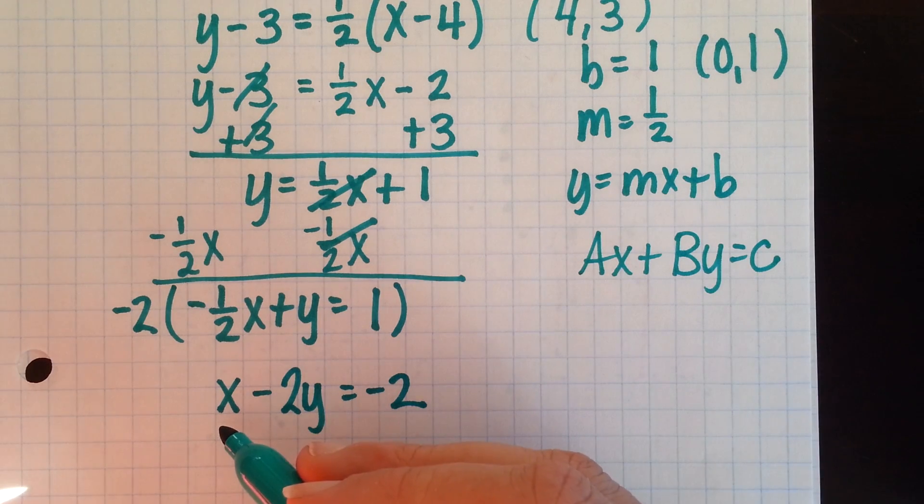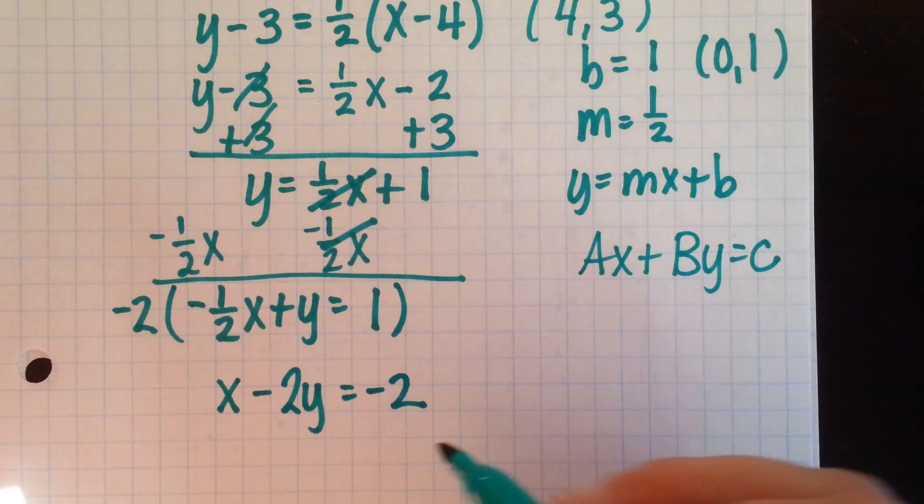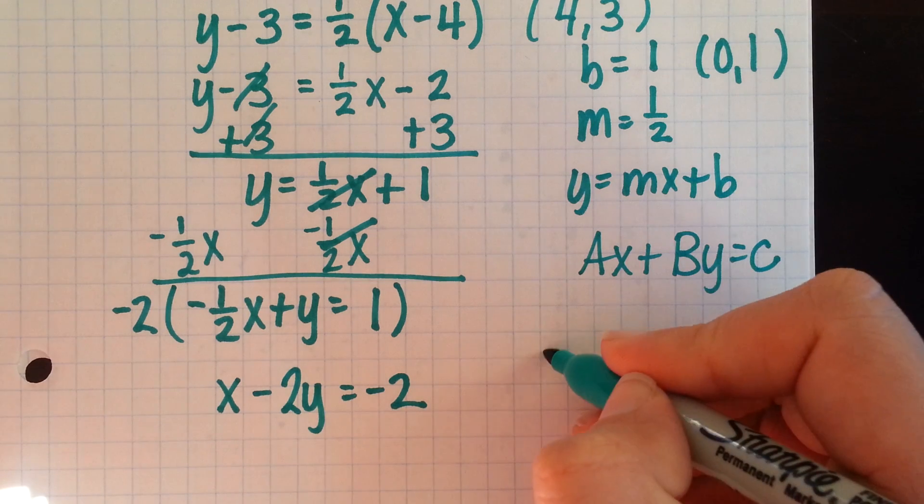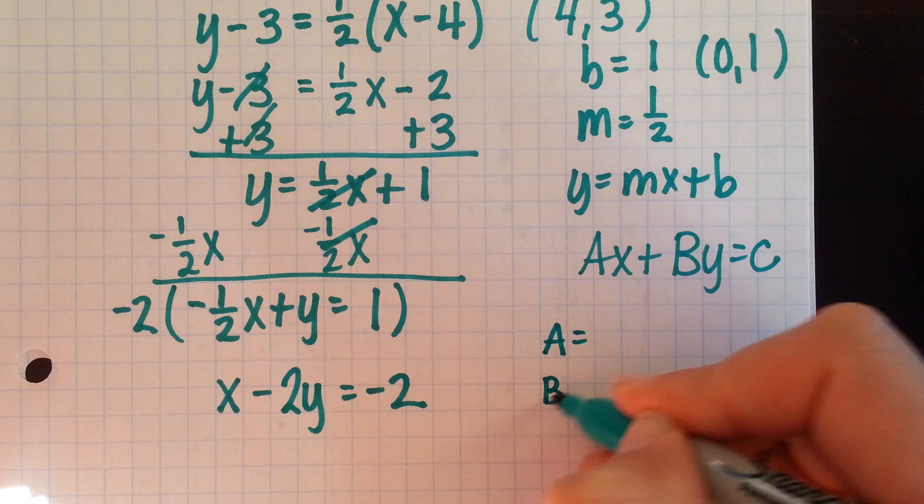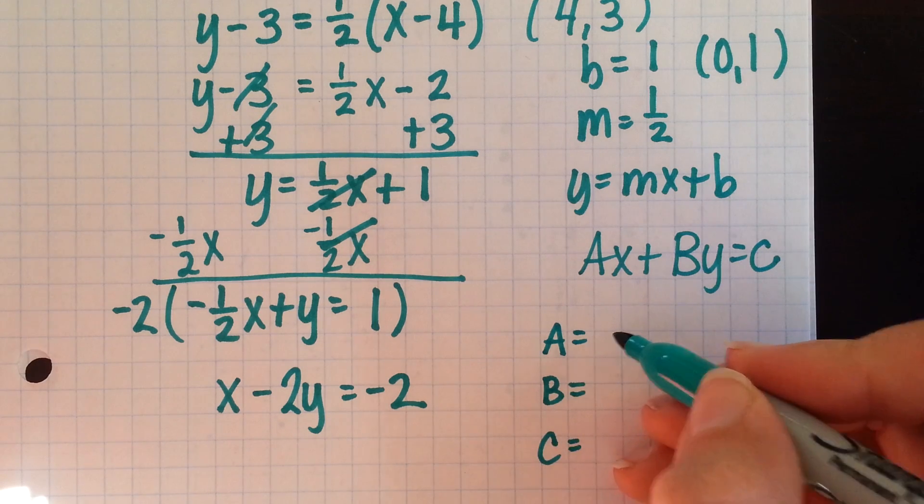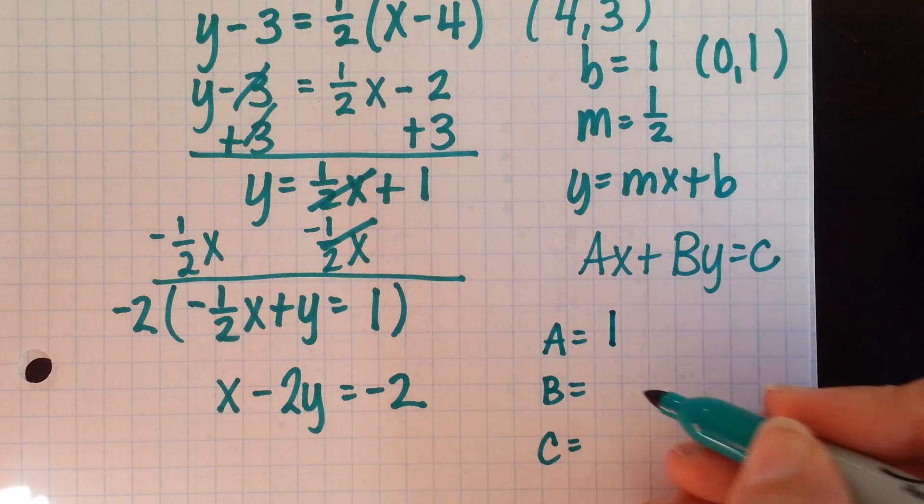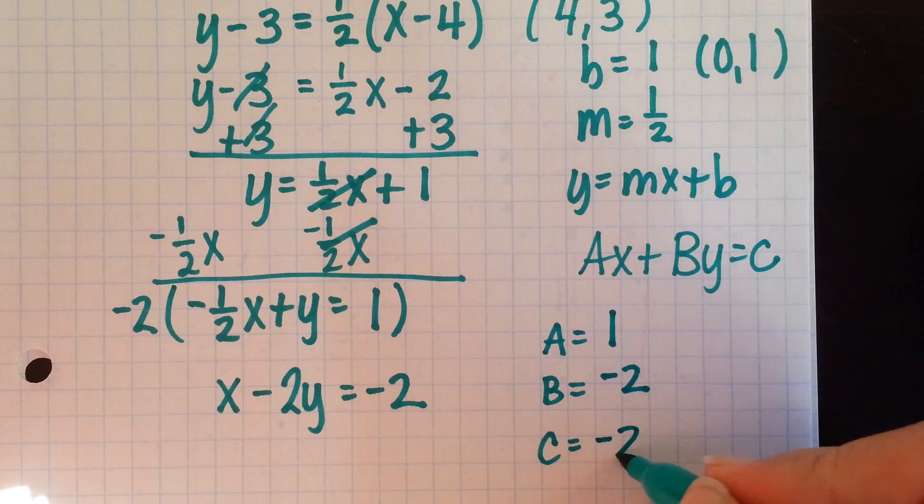Now we have an equation in standard form, Ax plus By equals C. Remember, we could use our shortcuts if we wanted to find our x-intercept, y-intercept, and slope. First, we need to know our a, b, and c. Our a is 1, our b is negative 2, and our c is negative 2.